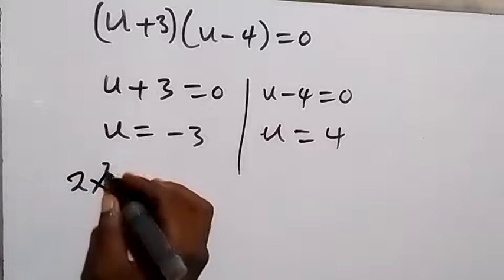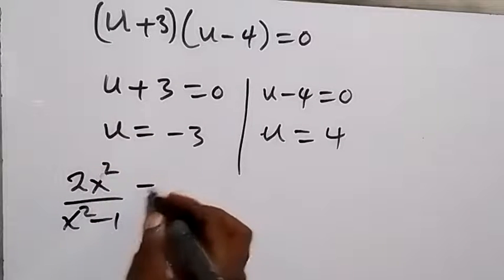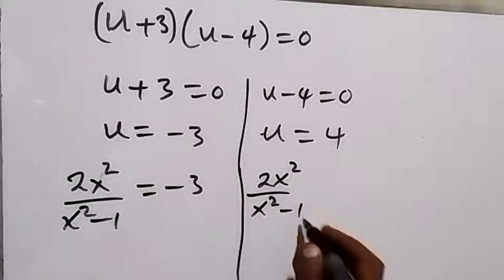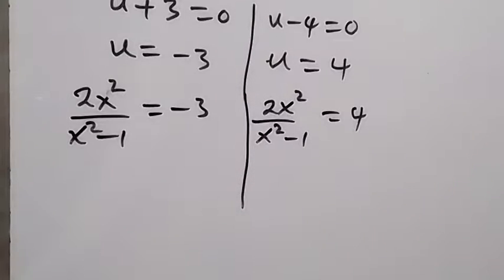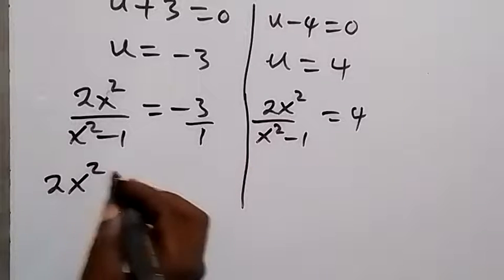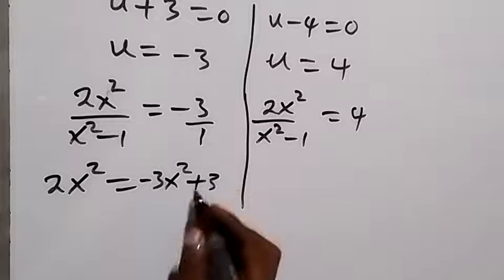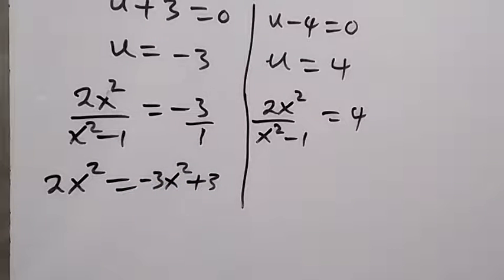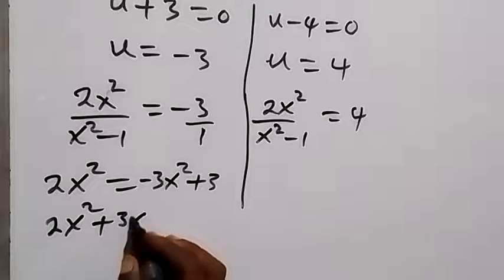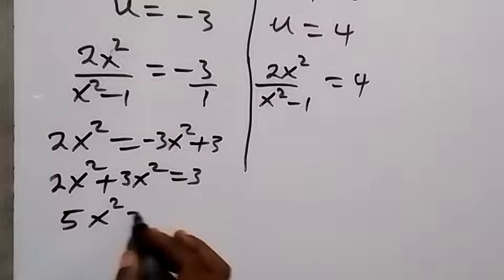From here, u equals minus 3 and u equals 4. What we used u to represent is 2x² over x²-1. For u equals minus 3: 2x²/(x²-1) equals minus 3. Cross-multiplying: 2x² equals minus 3x² plus 3. Collecting like terms: 2x² plus 3x² equals 3, so 5x² equals 3.